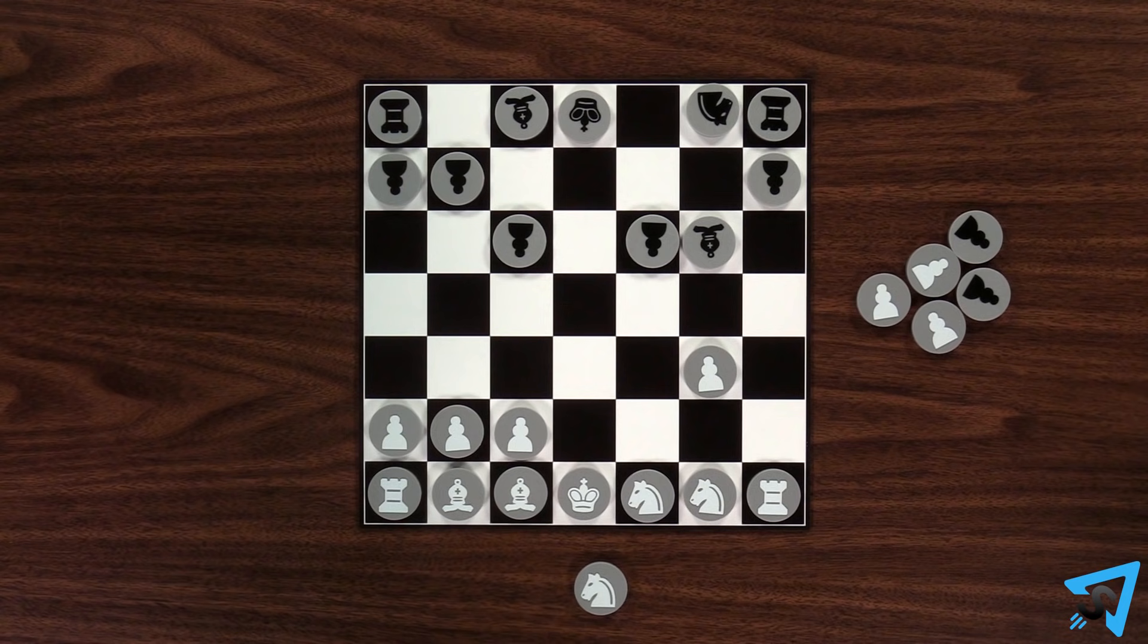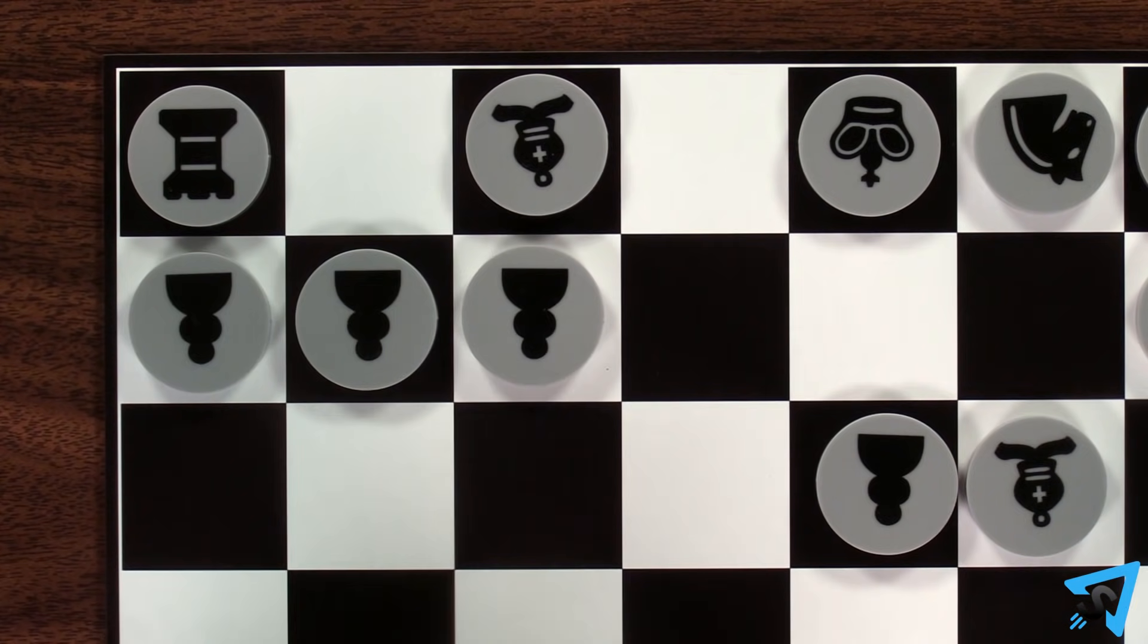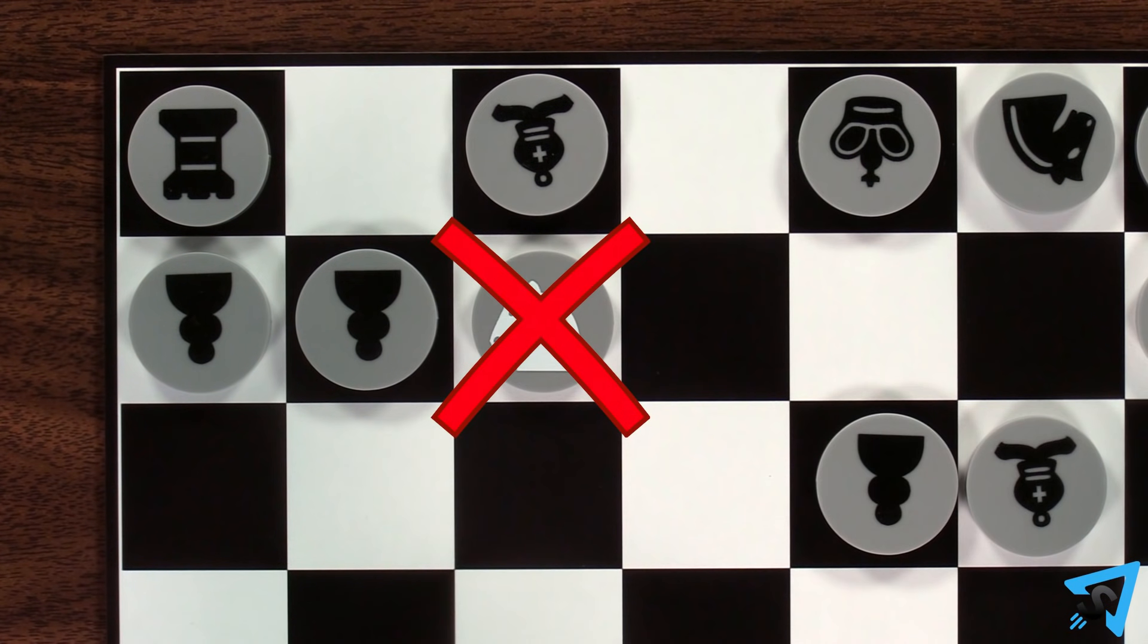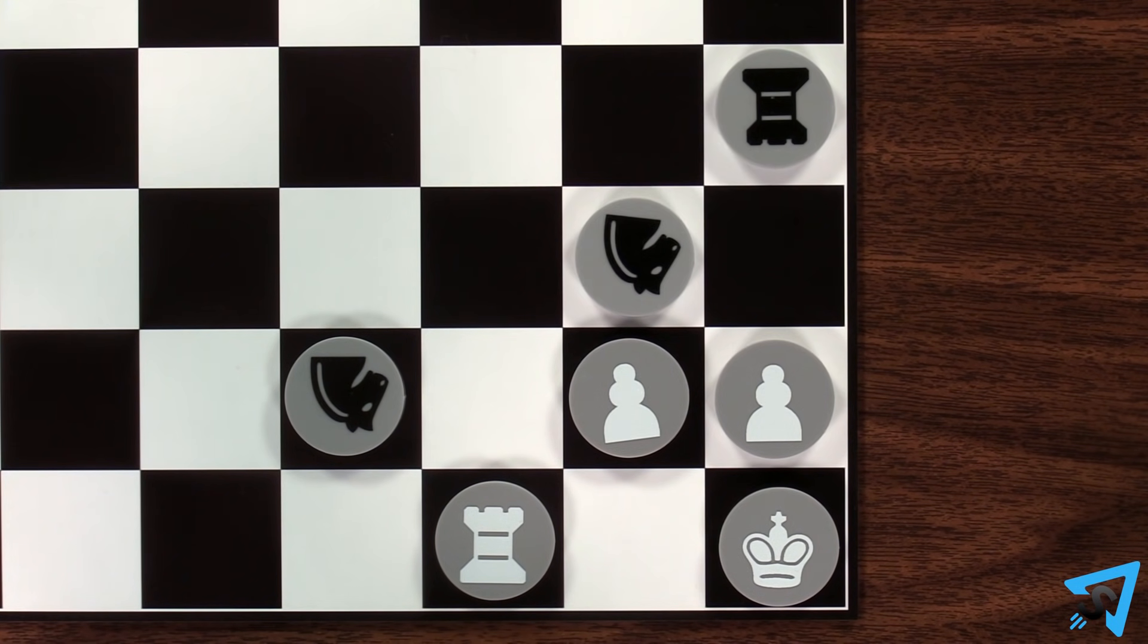On your turn, instead of moving a piece, you can drop a piece from your pool on any empty space on the board. Pieces may not be dropped on occupied spaces, but you are allowed to drop a piece to give check or checkmate.